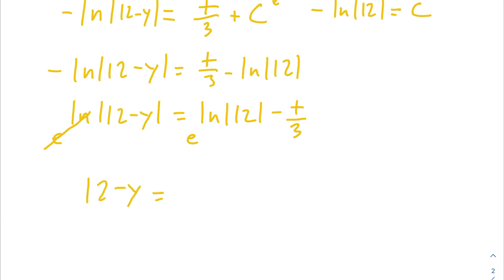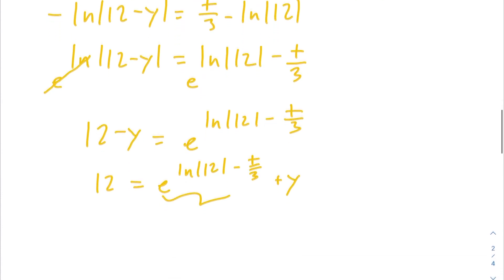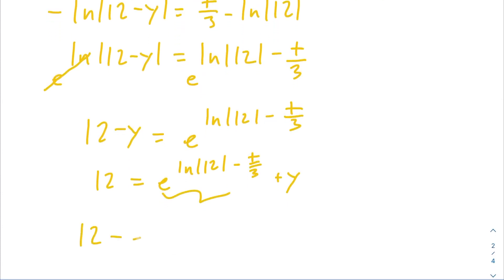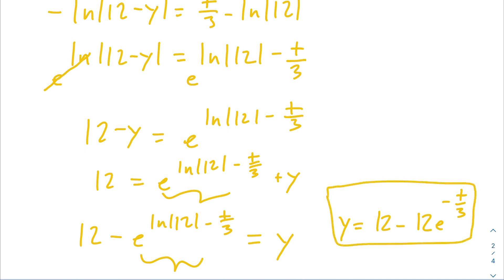We have 12 - y = e^(ln 12 - t/3). Adding y to the other side: 12 = e^(ln 12 - t/3) + y, then subtracting to isolate y: y = 12 - e^(ln 12 - t/3). We can simplify by dropping the 12 from the exponent: y = a(t) = 12 - 12e^(-t/3). That is our final answer for part c.